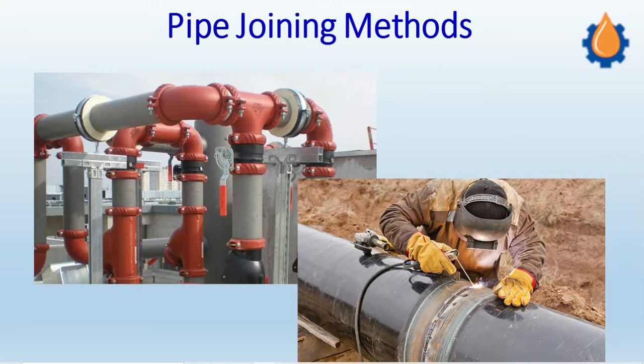When we weld together two different pipes, it becomes a permanent joint — we cannot separate it without cutting or causing physical damage to the dimensions. The other type is the temporary joint, which can be assembled as a single entity and separated again without physical damage to the two parts, such as two pipes.